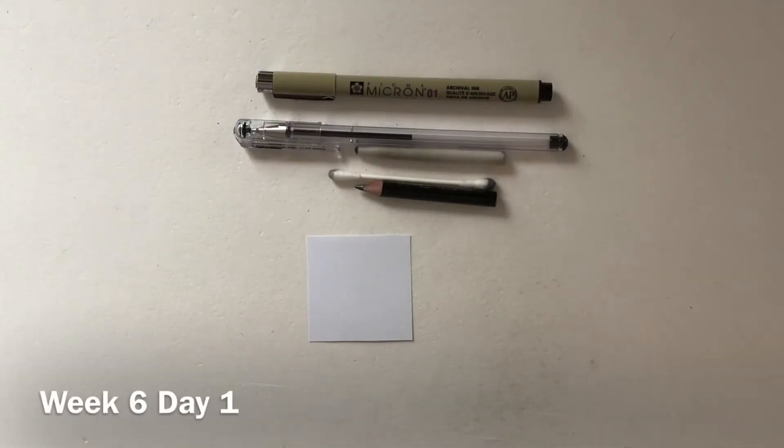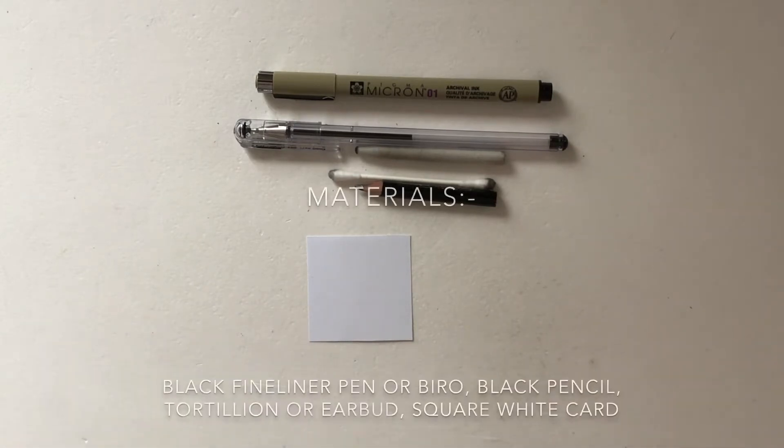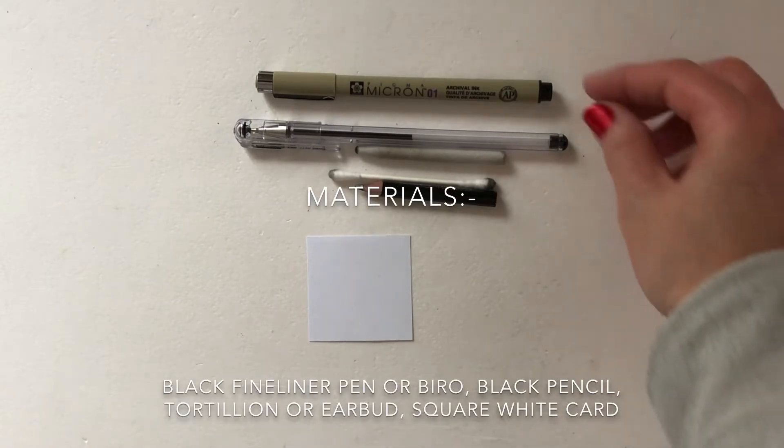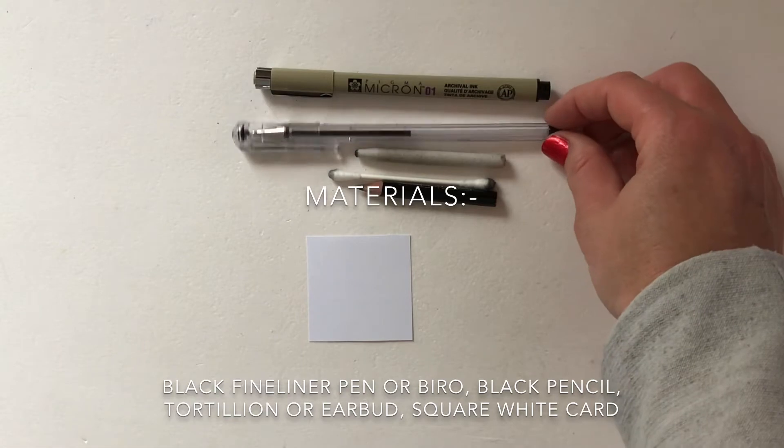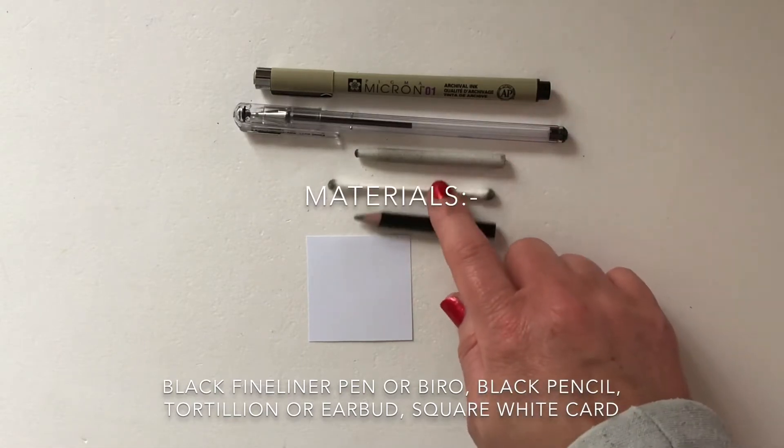Hi guys, Hannah here, and welcome to today's mini Zentangle session. Today is week six, day one, and the materials we're going to use are a black fineliner pen or, if you don't have one, a black biro.